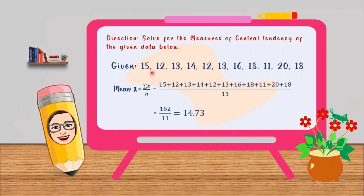So we have 15, 12, 13, 14, 12, 13, 16, 18, 11, 20, and 18.